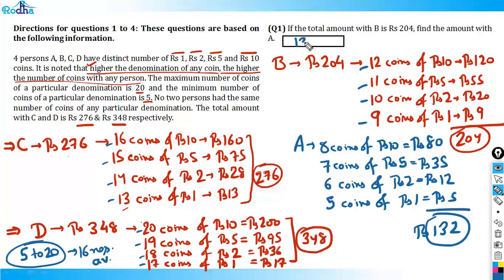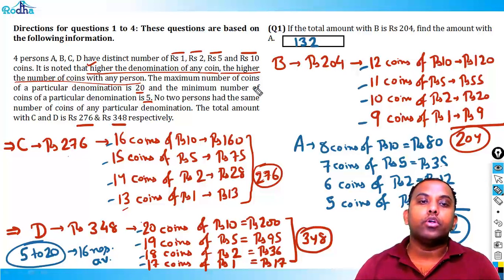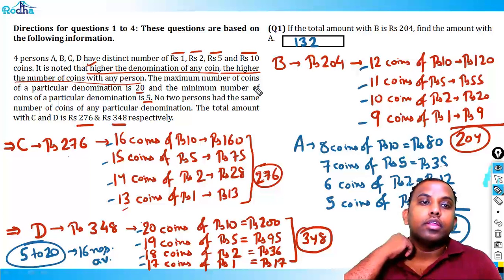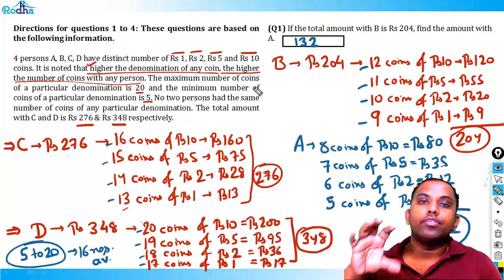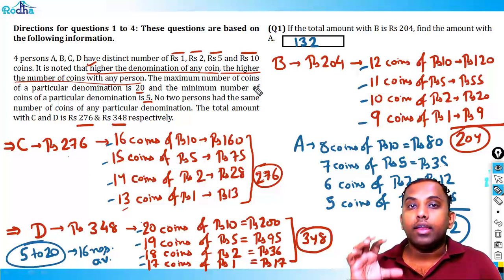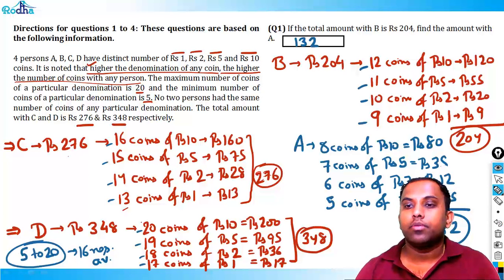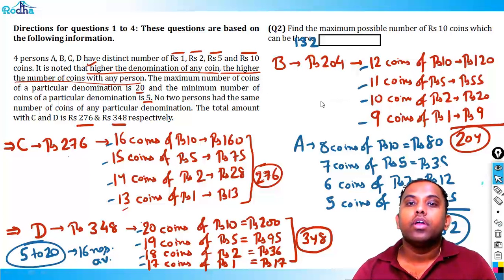The answer to Question 1 is rupees 132. This set requires good hidden-trial thinking for the CAT exam — practice is essential. This is a typical example of an unconventional set asked in CAT in the last two to three years. Now let's look at Question 2.